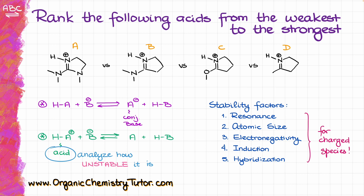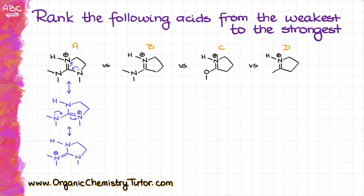I'm going to be analyzing the acids themselves. The least stable one will be the most acidic and the most stable will be the least acidic. Going down the list of factors, I'll start by looking at resonance structures. The first molecule A can give us two other resonance structures, so the overall count is three major contributors. Likewise, molecule B has one additional major resonance contributor.